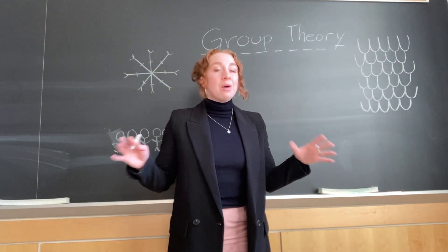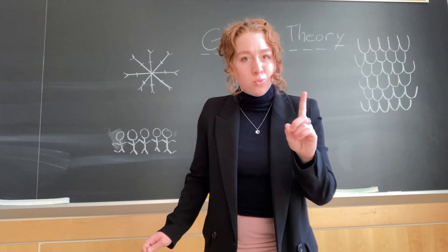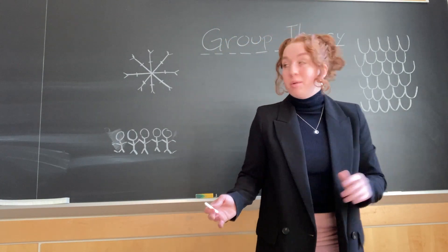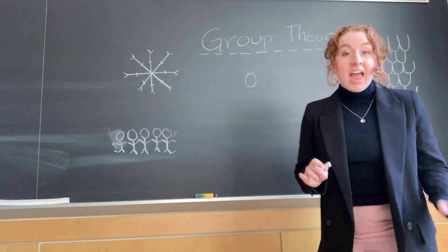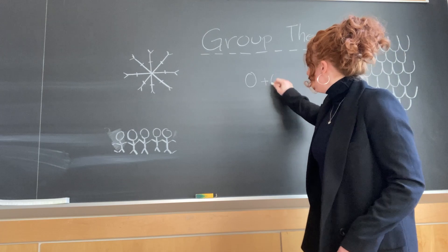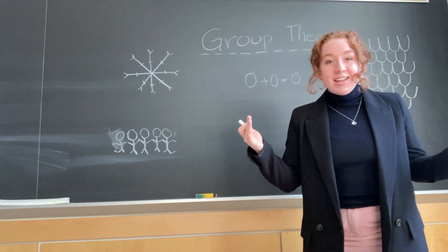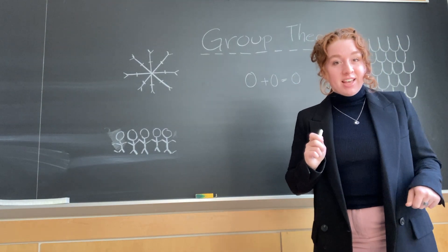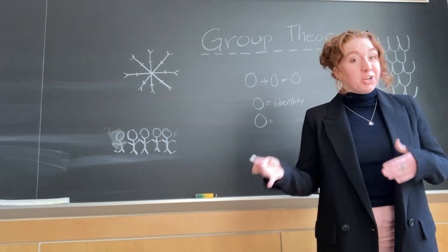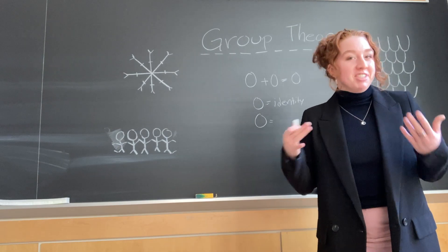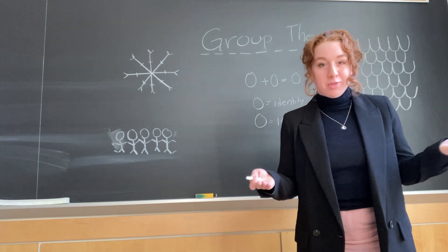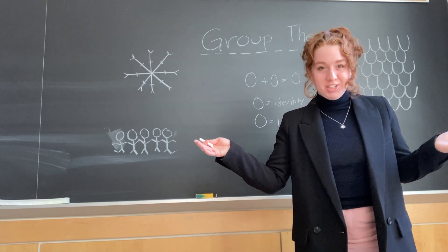So the integers are a group, but there are actually countless other groups out there. Some of them are as simple as just one element large. Let's say, for instance, that we just had an identity element — zero — and that was the only thing in our set. Zero plus zero equals zero, so if we add zero together, we stay inside the set. Zero is the identity, zero plus zero is zero so zero is its own inverse, and zero adheres to associativity because it doesn't matter where we put the parentheses when adding zeros together.